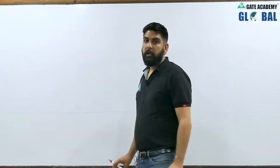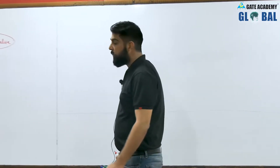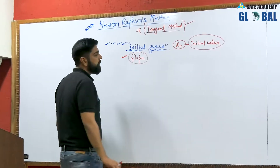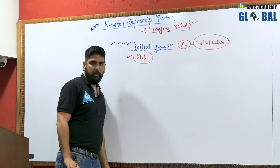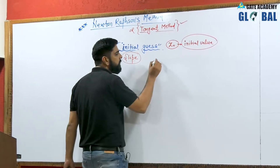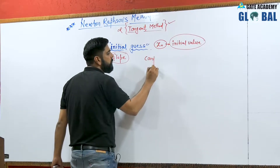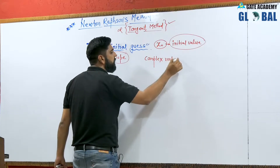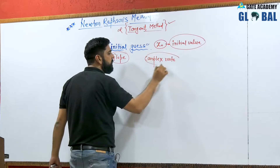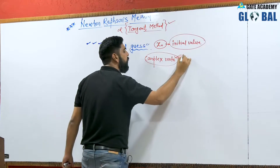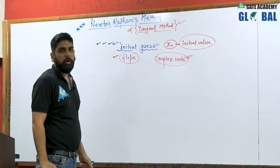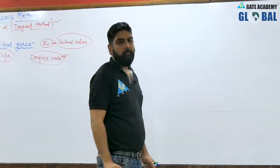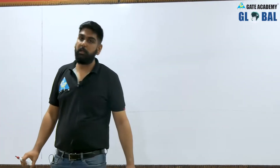By the Newton-Raphson method we can locate complex roots also. Additionally, for finding the cube root and nth root we can use the Newton-Raphson method.